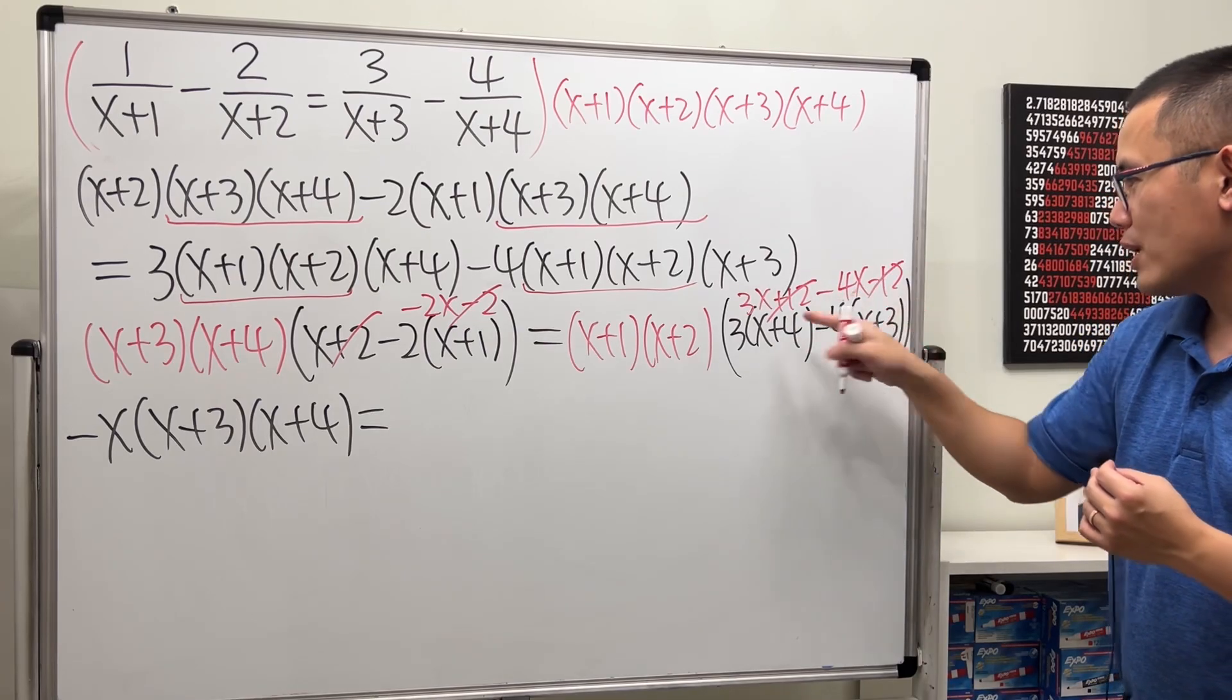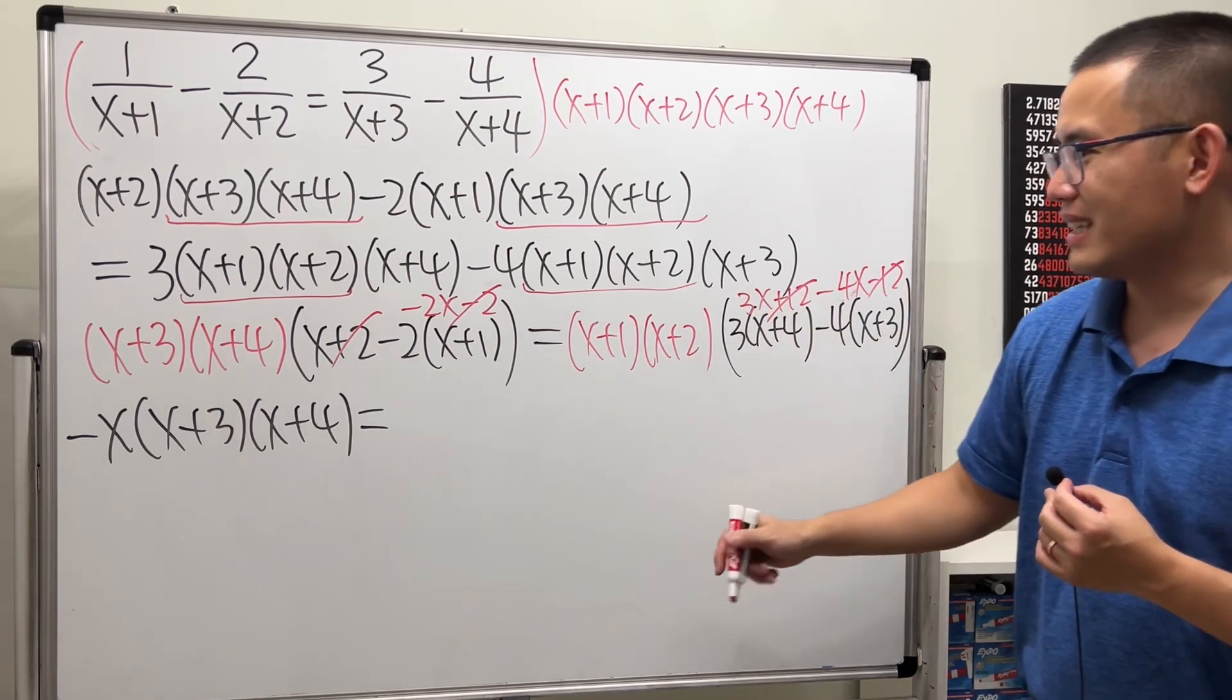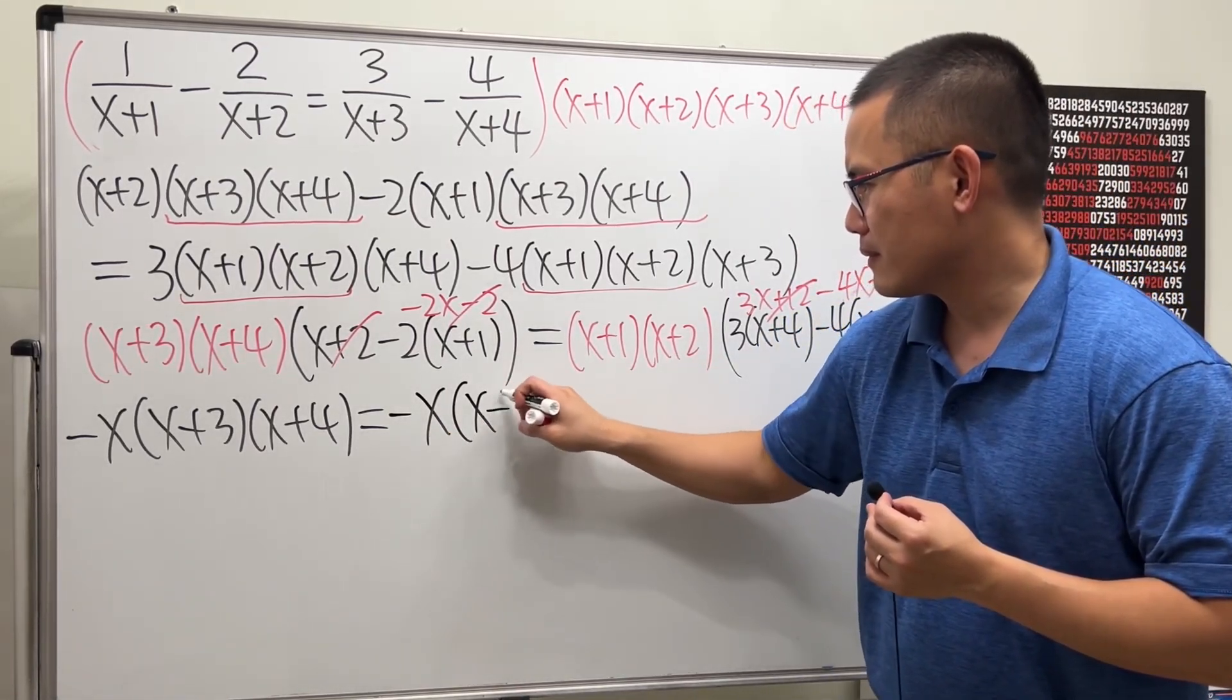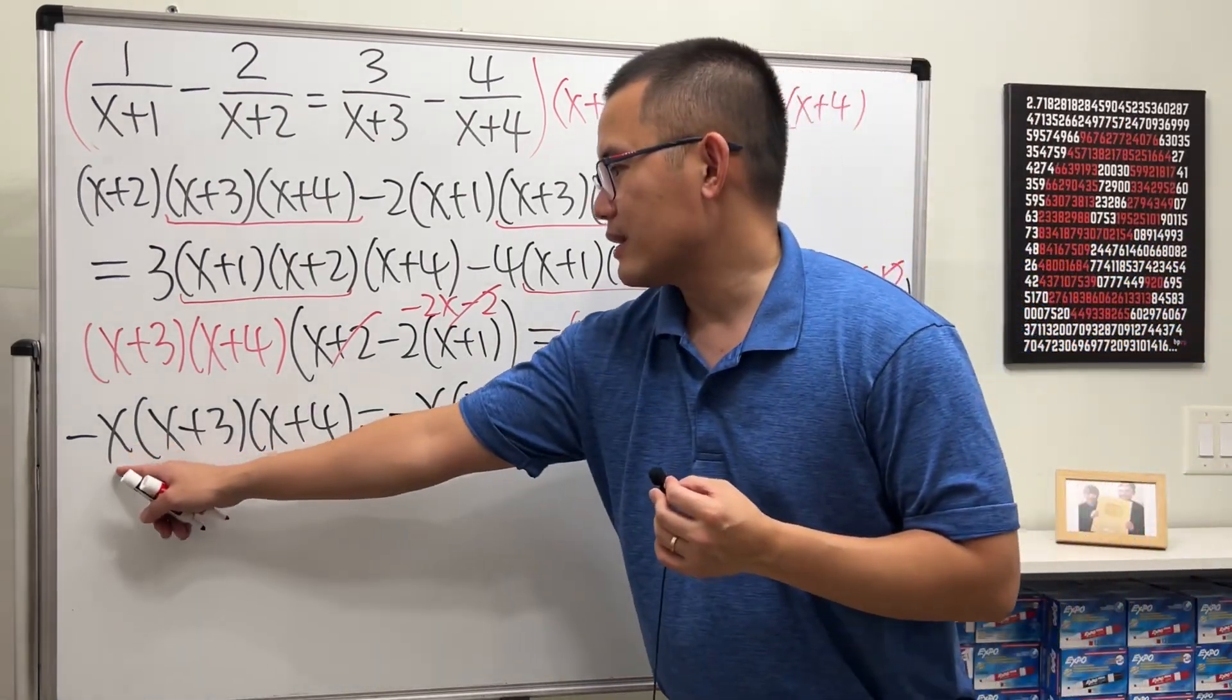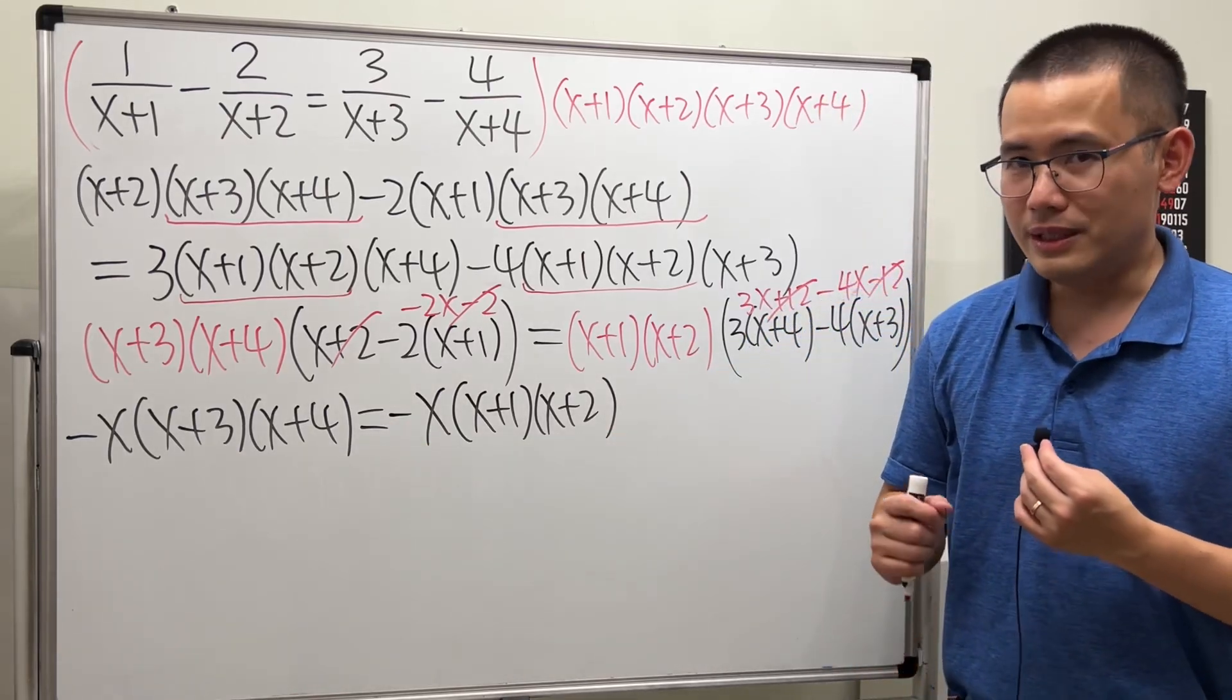12 and 12, 12 and minus 12 cancel. 3x and minus 4x is negative x. Let's put that down right here. So now, notice, we have negative x on both sides, and they are multiplying. So x equals 0 is the solution.